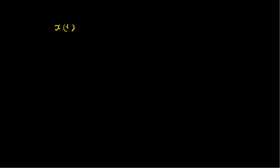Hello, welcome. In this short video, let us look at the plotting of a sinusoidal signal. A sinusoidal signal is basically one of the fundamental signals. In this video we are going to look at x(t) = A·cos(ωt + φ) and we are going to plot this function.